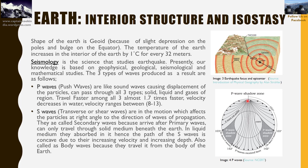The shadow zone is an area where a particular wave is unable to reach, due to different mediums or energy conditions beneath the surface. S waves are also called transverse, shear, or secondary waves — they come after primary waves. They move particles at right angles to the direction of wave propagation.